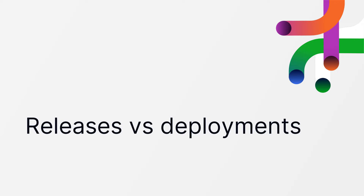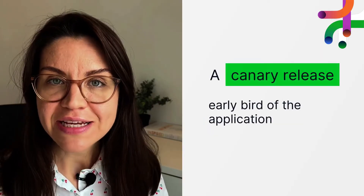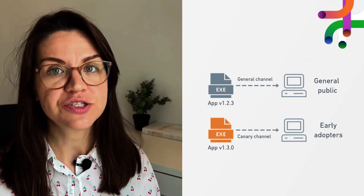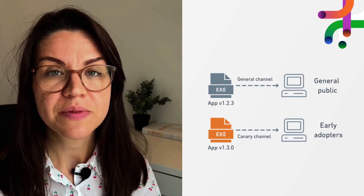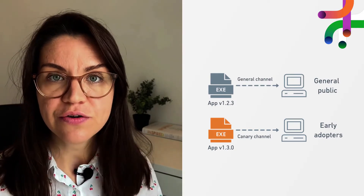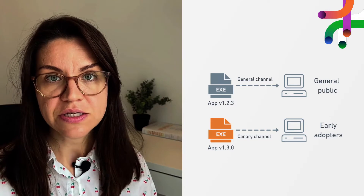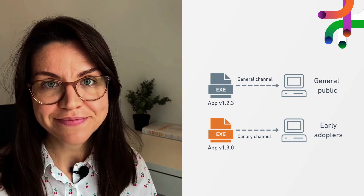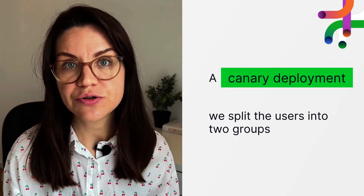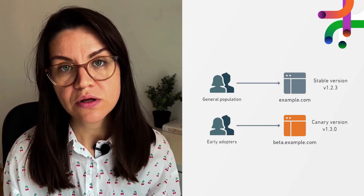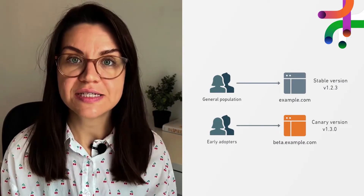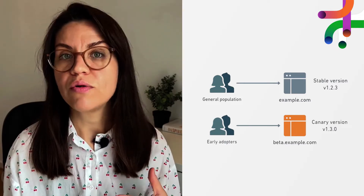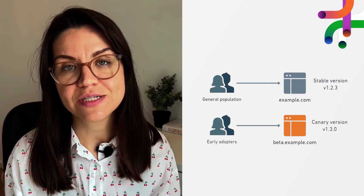So releases versus deployments. A canary release is an early bird of the application. Splitting stable and development branches is a widespread strategy in the open source world. Companies would publish a canary version of their application or product, hoping that tech-savvy or power users would download it and try it out. In a canary deployment, we split the users into two groups — a small percentage go to canary while the rest stay on the stable version. Later on, we can decide whether to roll everyone to canary or roll back to a more stable version.